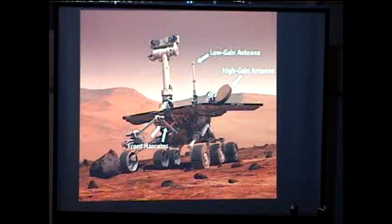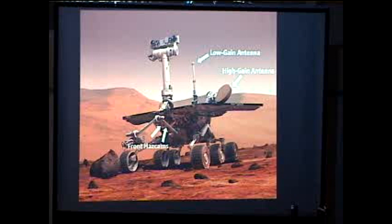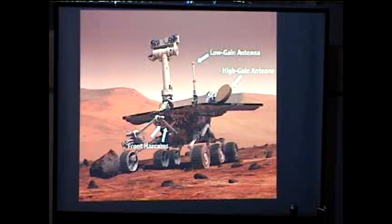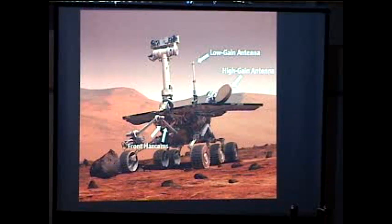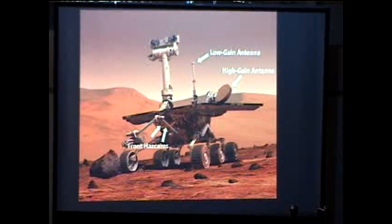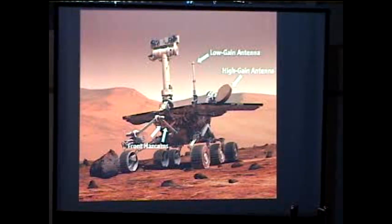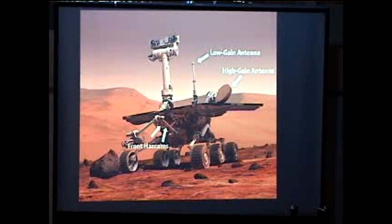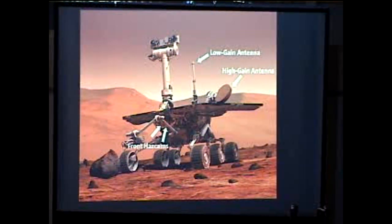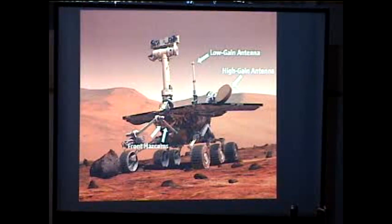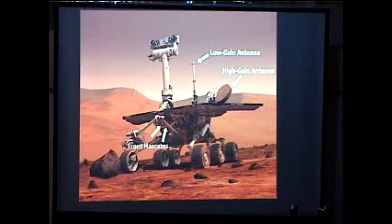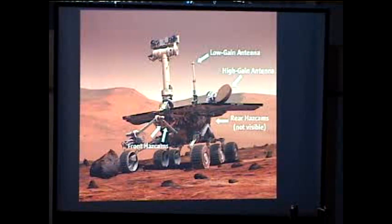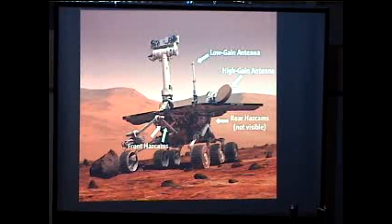Then there are these two things on the front called the front haz cams or hazard cams. It's kind of hard to see, but right in there are two cameras. They would be used basically to detect hazards in the rover's way, like for example that rock. If the mission scientists commanded the rover to drive 100 meters in a straight line, the hazard cameras might figure out there's a rock in the way, so they'd better stop and either go around it or wait for more direction from mission scientists. Those are the front two. There are also two on the back, which you can't see from this angle. Four hazard cameras in total.